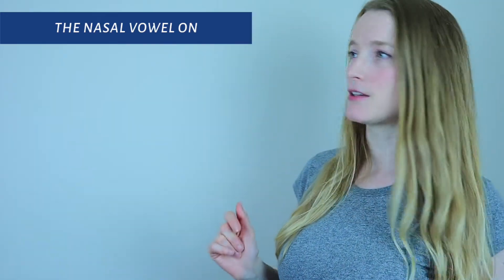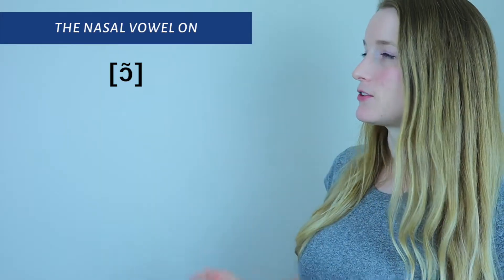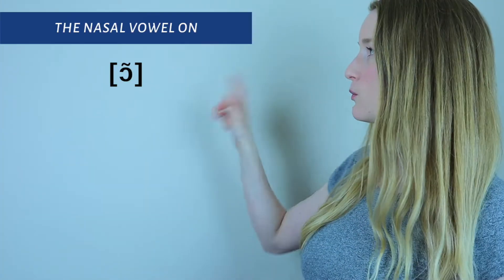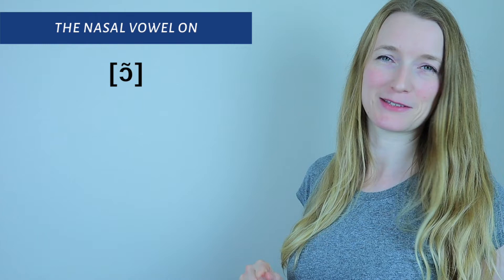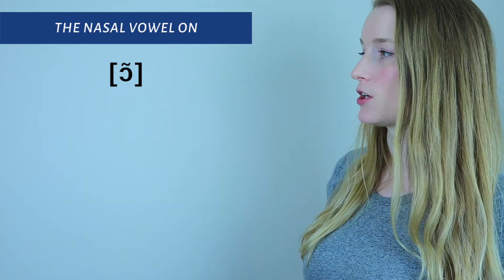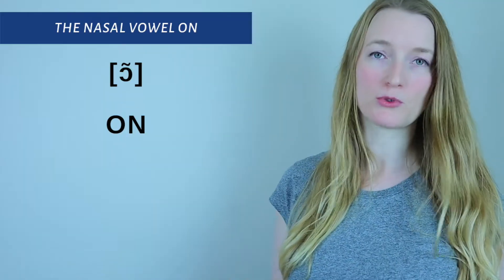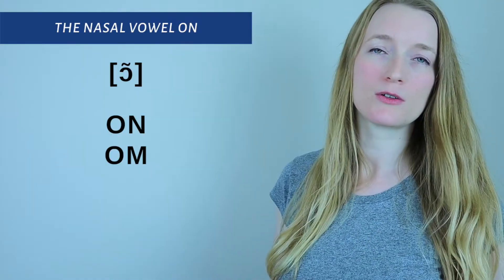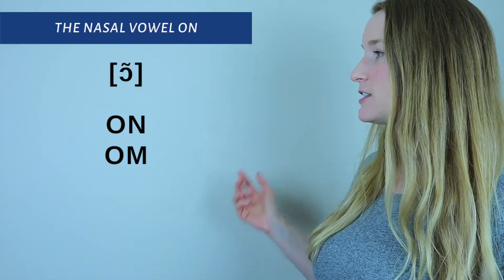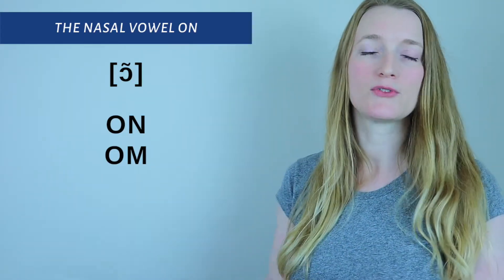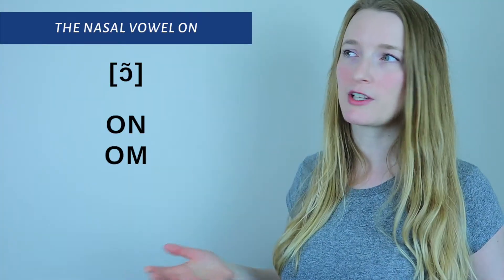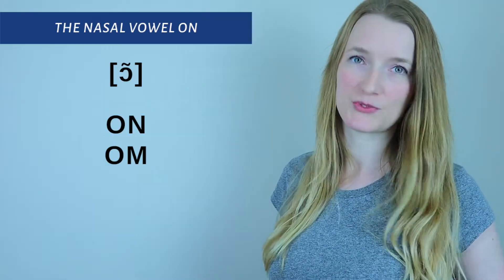So let's start with the IPA. For this one it's going to be a C switched on the other side with the little thing on top. It's the best way I can explain it. So we have two ways to write ON in French. We have ON which is the most common and then we have OM. The sound is exactly the same. It's basically OM when it's before a B or a P. That's it. That's the only reason, with an exception of course that you all know we are going to see it.